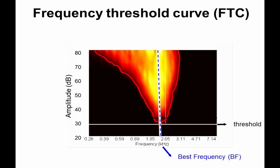The more yellow we have, the more response the auditory nerve fiber shows; black means no response. So this nerve fiber hasn't got any spontaneous rate. We play pure tones of very short duration at all of these frequencies and amplitudes, and together they make up this graph, which shows us for each frequency and amplitude combination whether our auditory nerve fiber responds.